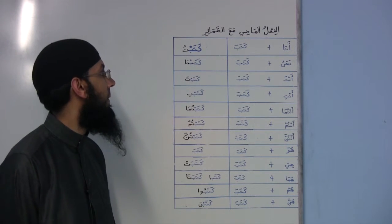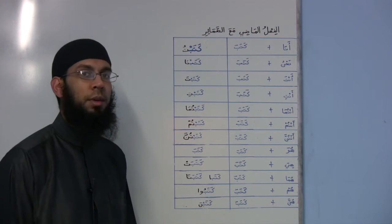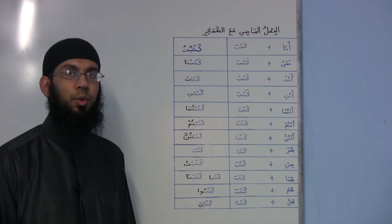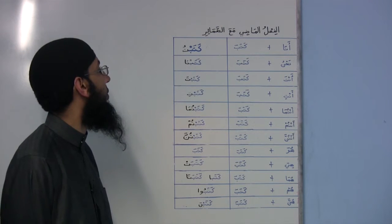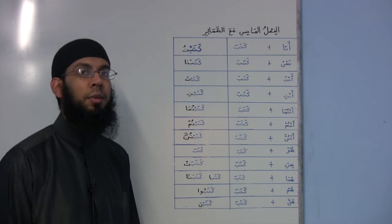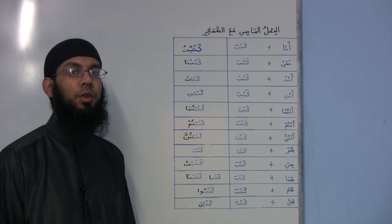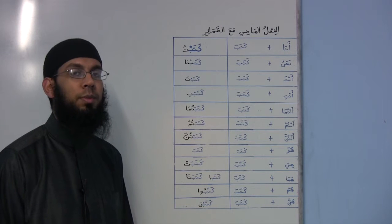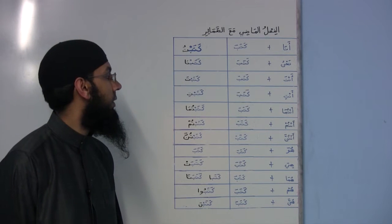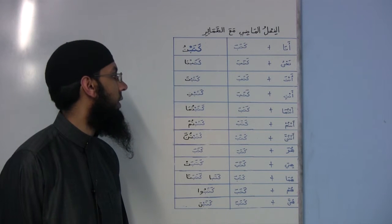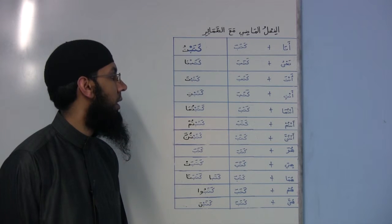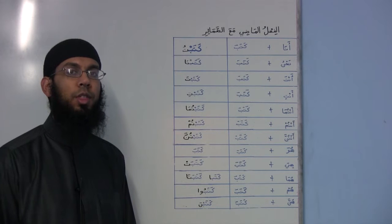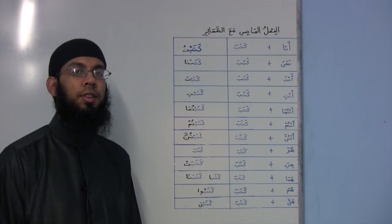We are not going to translate them again. Ana plus kataba — kataba is the past tense verb meaning 'he wrote' — so if you want to say 'I wrote,' it is katabtu. Nahnu plus kataba: katabna — 'we wrote.' Enta plus kataba: katabta — 'you wrote,' masculine singular. Enti plus kataba: katabti — 'you wrote,' singular feminine. Entuma plus kataba: katabtuma — 'you two wrote.'